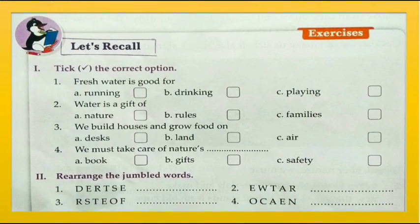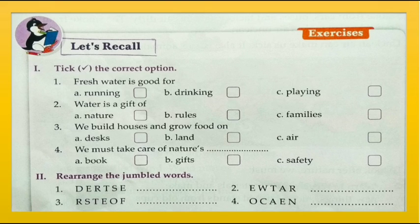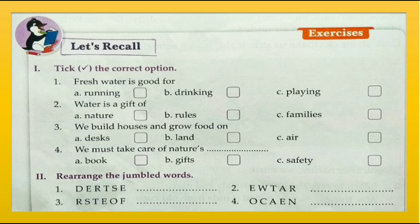We have completed our chapter. Let's do the textbook exercise. Key statements: fresh water is good for drinking; water is a gift of nature; we build houses and grow food on land; we must take care of nature's gifts. Now rearrange the jumble words: desert, water, forest, ocean. We have completed our textbook exercise and the chapter. Hope you have understood. Thanks for studying with Study Buzz!